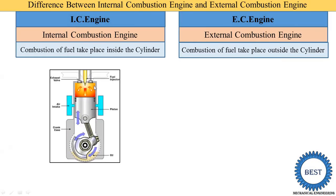In an internal combustion engine, we use fuel like petrol, diesel, or gas. The petrol is supplied with air, and combustion of the fuel takes place inside the cylinder. Due to this combustion, high pressure is created, and these high pressure gases apply force on the piston. The piston rotates the shaft, and the shaft produces work — so mechanical power is produced by using the IC engine.